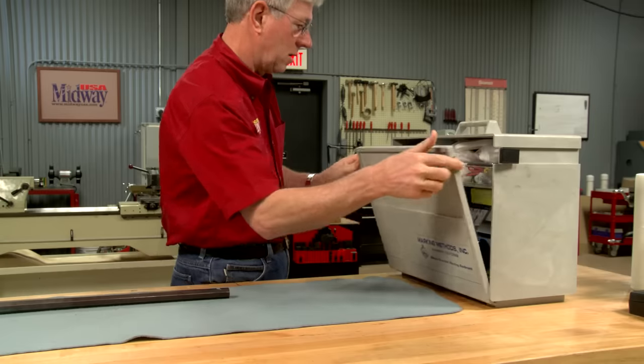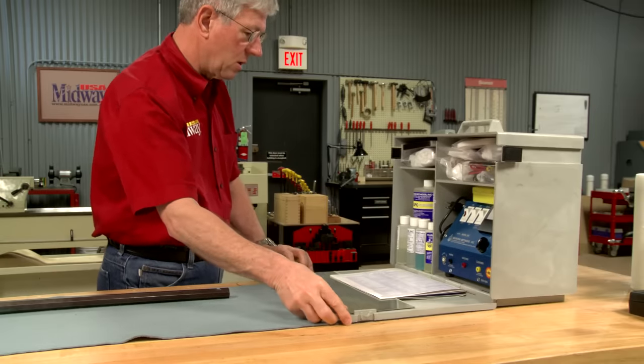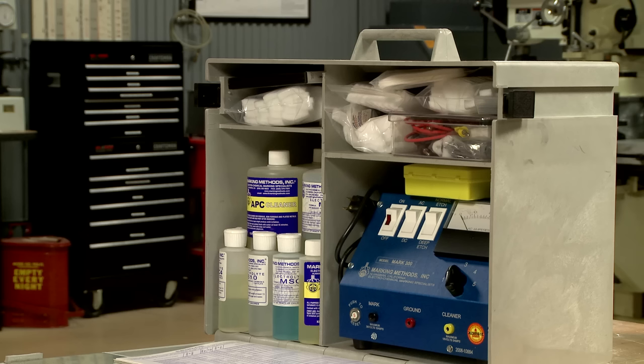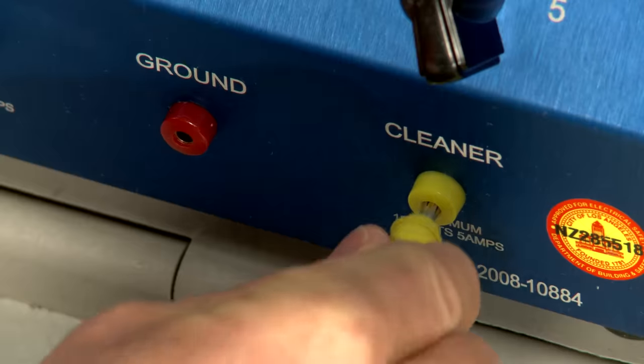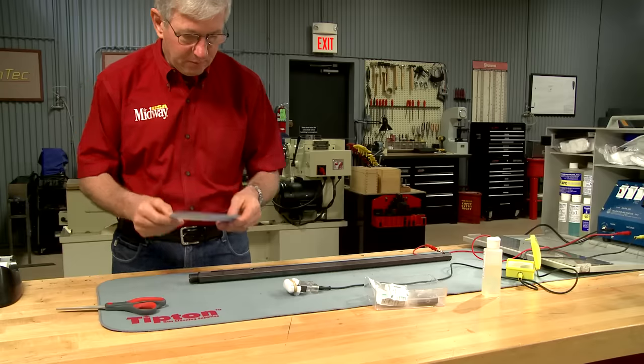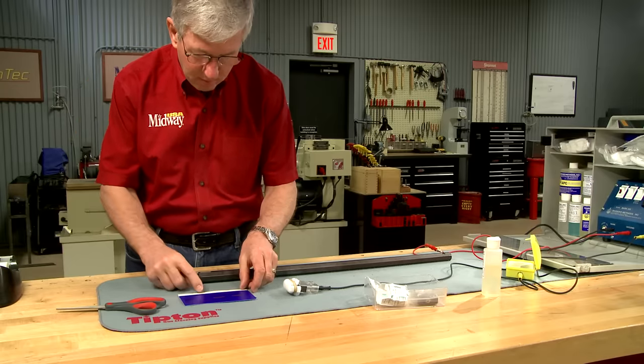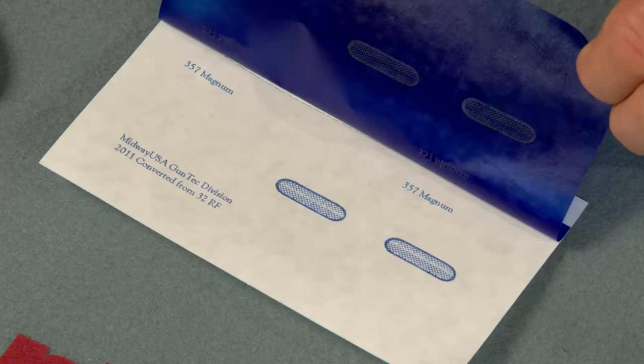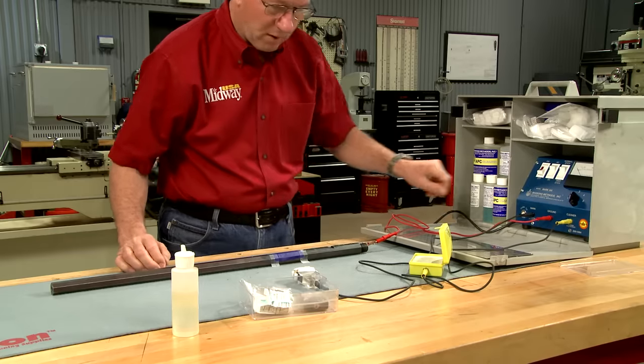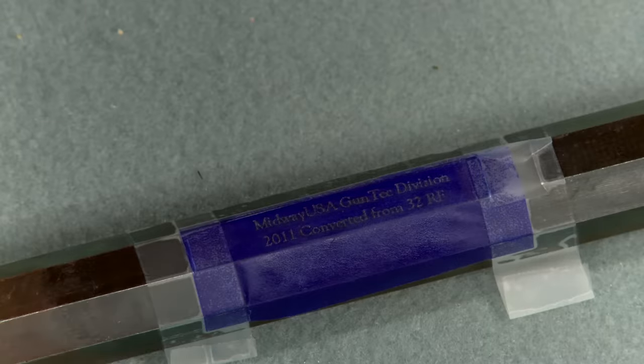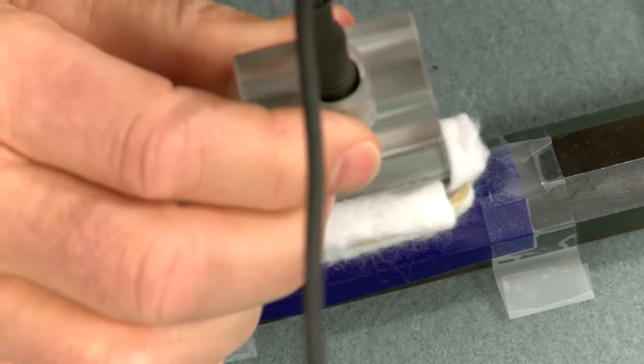The marks are made using the machine from Marking Methods. It uses a process of electrochemical etching. I've printed a stencil that just needs to be taped to the barrel. Touching the marking pad to the barrel etches the mark through the stencil.